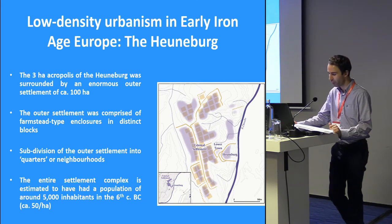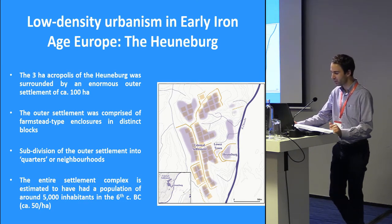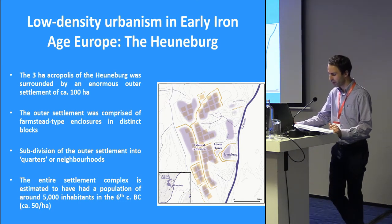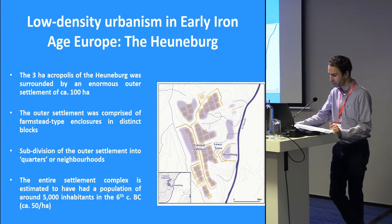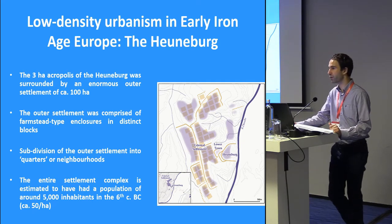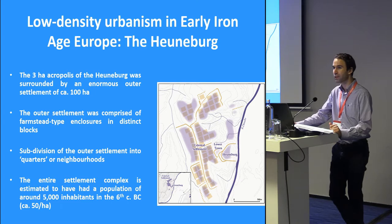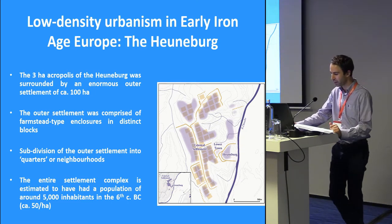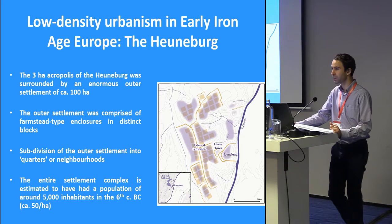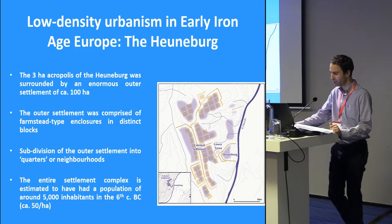Whereas the hilltop of the acropolis was densely occupied with rows of houses set along a rectilinear street network and surrounded by a Mediterranean-inspired mud-brick wall, the outer settlement was comprised of farmstead-type enclosures in distinct blocks. It is tempting to interpret the subdivision of the outer settlement into neighborhoods as evidence for the existence of different kinship groups, which came together during a process of synoikism, which underpinned the creation of the agglomeration. The settlement complex with hilltop, lower town and outer settlement is estimated to have had a population of around 5,000 inhabitants, therefore having a density of about 50 inhabitants per hectare. The outer settlement appears to reveal the presence of farmstead-like compounds within a larger urban agglomeration.